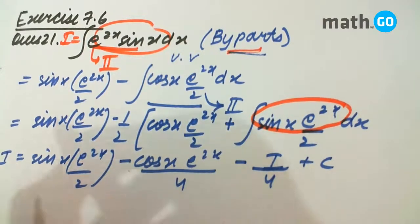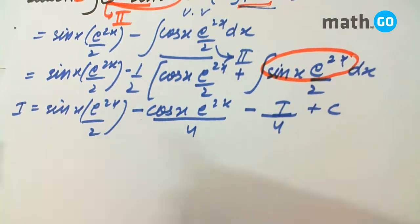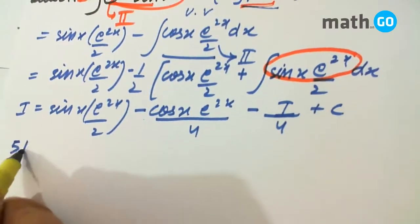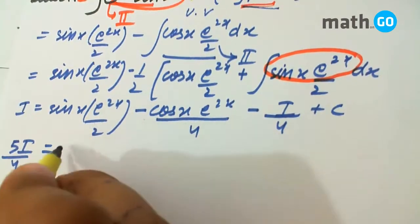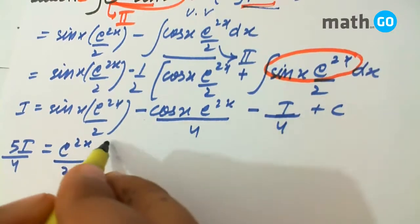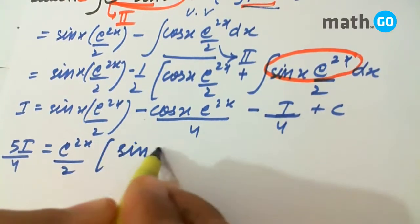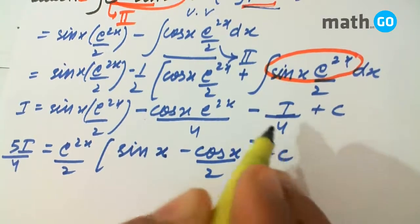Taking I to this side, we are left with 5I by 4 equals to this. Now e to the power 2x by 2 can be taken common, leaving us with sin x minus cos x upon 2, plus C.